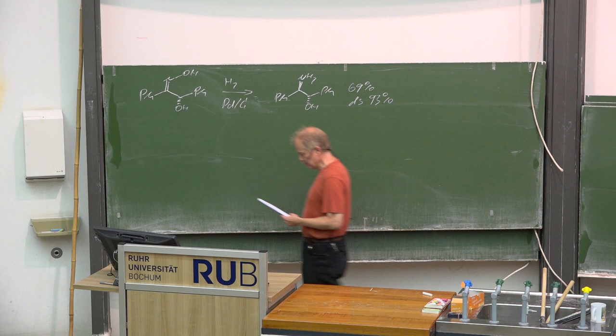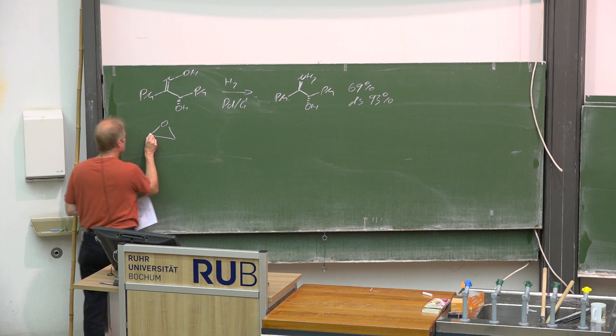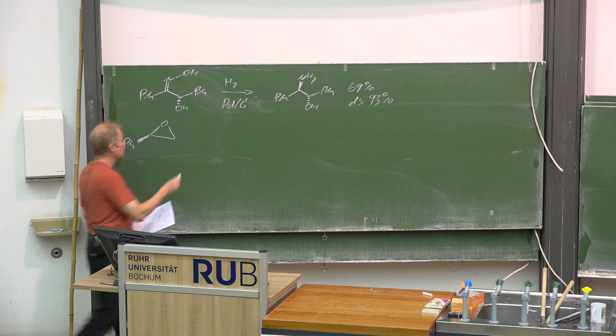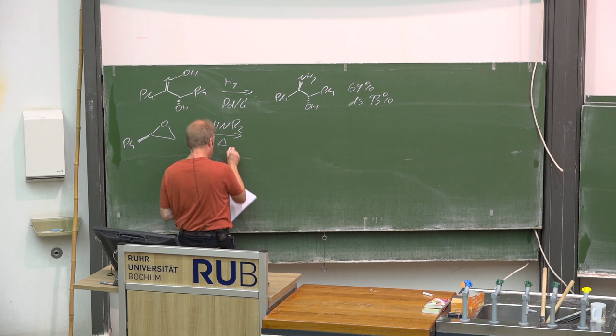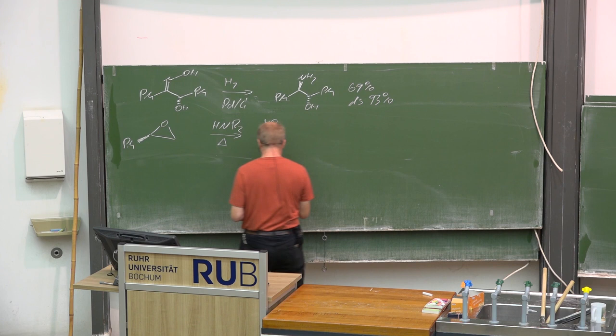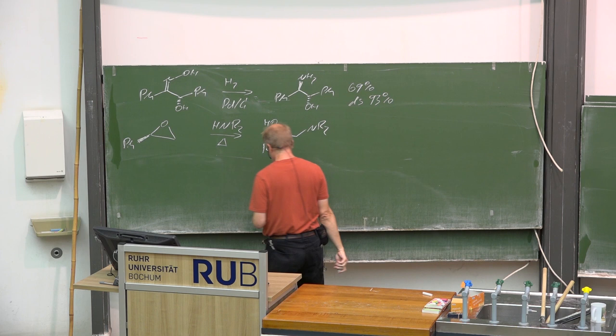And of course, if you have access to a chiral epoxide, you could just let that react with, for instance, a secondary amine, heating it up, and it will also result in a chiral amino alcohol.